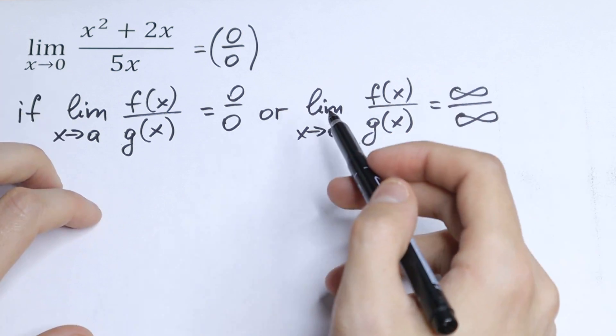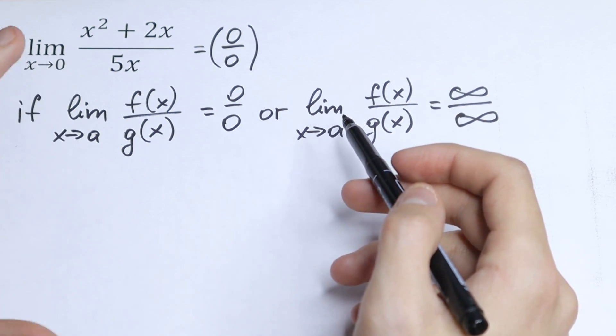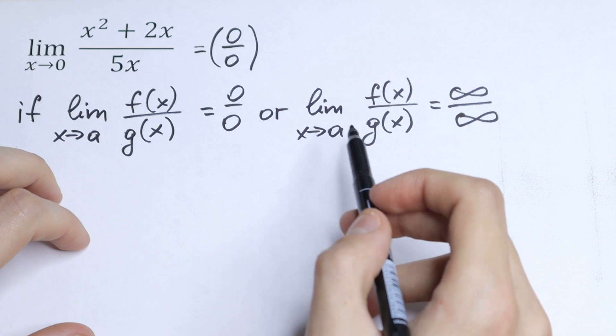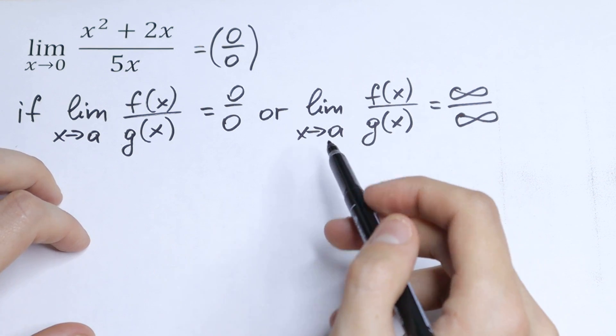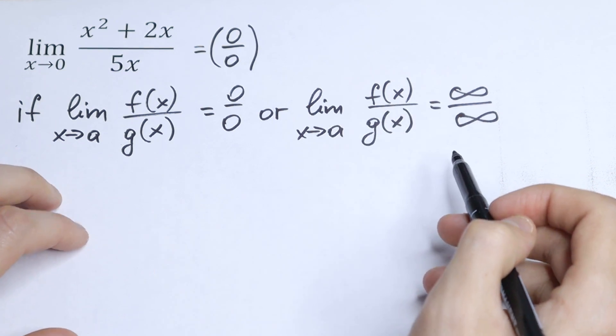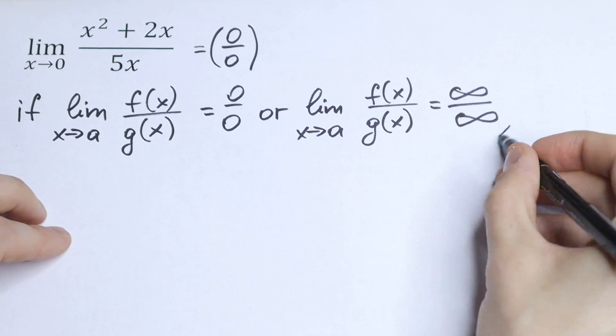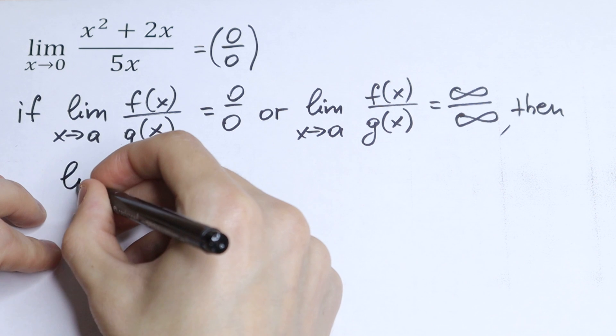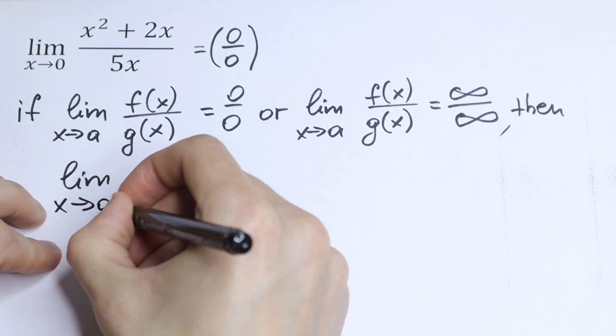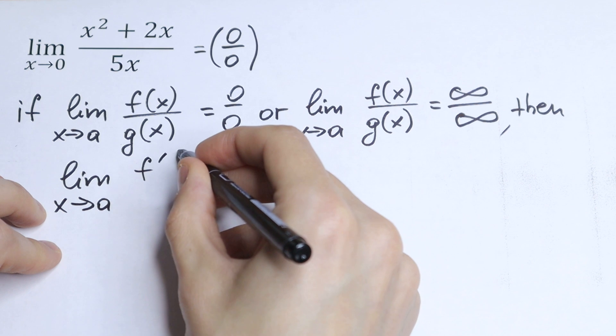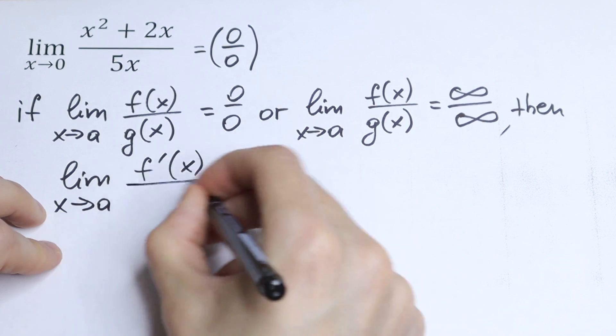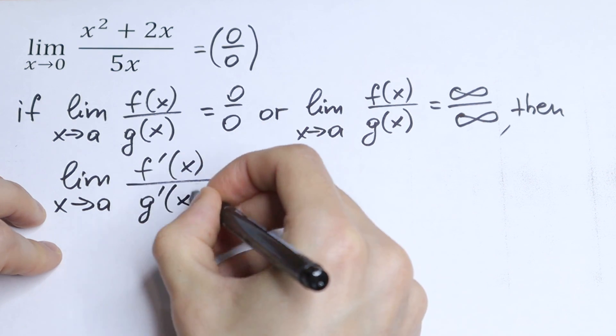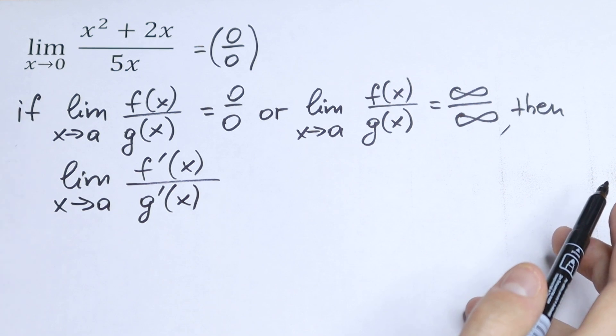Whenever direct substitution of a limit yields an undetermined form, the limit of the equation of the function is equal to the limit of their derivatives. So as a result we will have the limit x approaches to a of the function f prime of x over g prime of x. So this is L'Hôpital's rule.